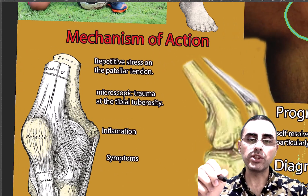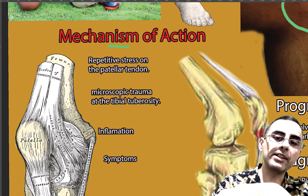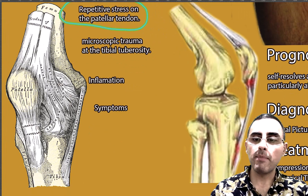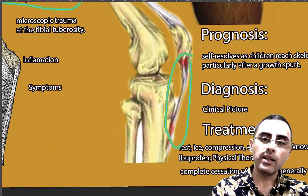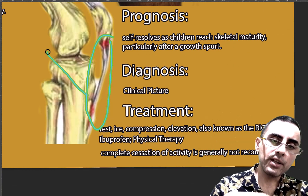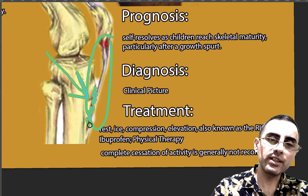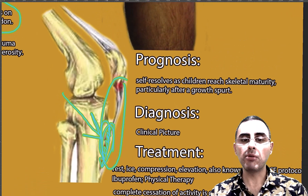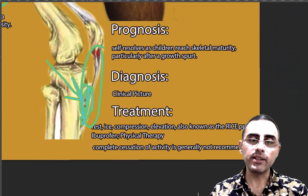What causes Osgood-Schlatter disease? The main mechanism is repetitive stress and tension of the patellar tendon. The patellar tendon is here, as you can see. Repetitive stress of this tendon causes micro-traumas and inflammatory processes here, and this inflammation causes pain and symptoms.